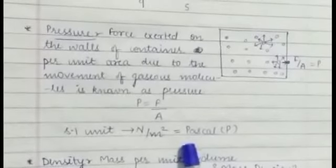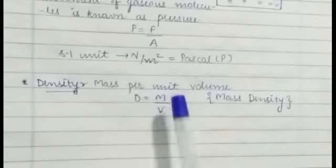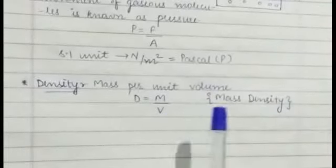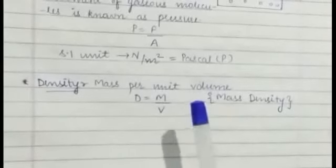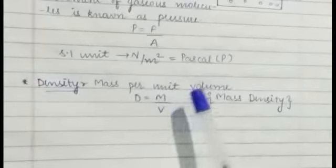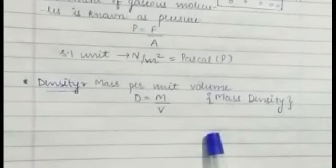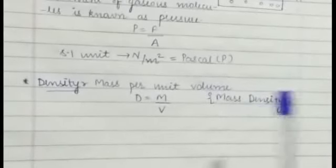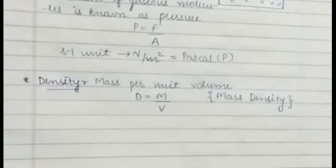Now we come to the fifth measurable property of a gas that is density. Density we have as mass per unit volume. Density formula is mass upon volume and we call it mass density. Density formula depends on what value we are measuring. If we call it population density, we call it population upon area because the population is the value and the area is the value. So density formula is not only mass upon volume, this is only mass density formula. Density formula depends upon what value we are measuring.